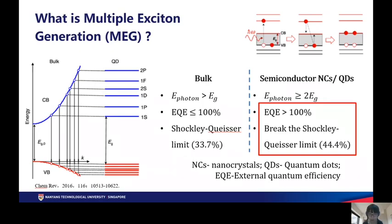For photons with energy higher than the band gap, a photon promotes only one electron-hole pair, creating one electron-hole pair at most, and extra energy dissipates in the form of heat by lattice vibration and transfers into useless phonons.